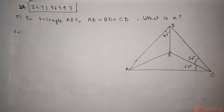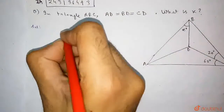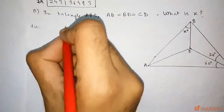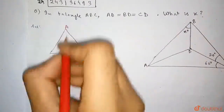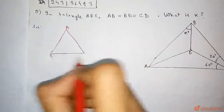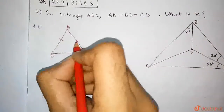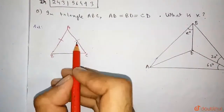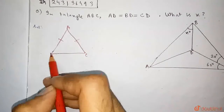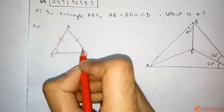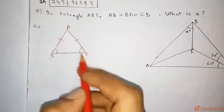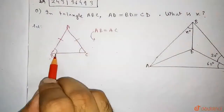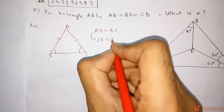Always remember that for a triangle, when two sides are equal, then the corresponding angles are also equal. For example, for triangle ABC, if it is given that AB is equal to AC, then we can say that the opposite angles of those sides are equal — that is, angle B is equal to angle C.